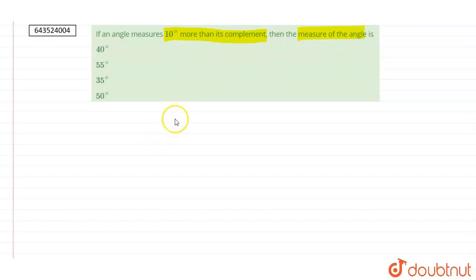So let's say that there are two angles, x and the second angle is x plus 10. As in the question, it has been given that the other angle measures 10 degrees more than its complement.